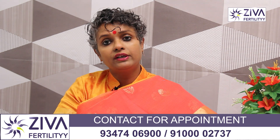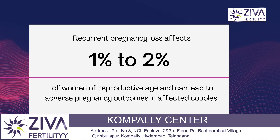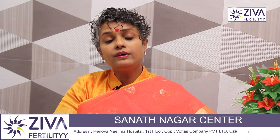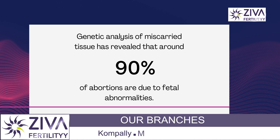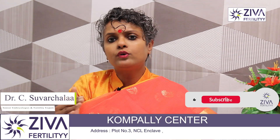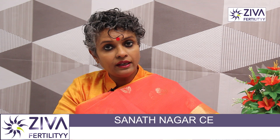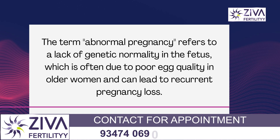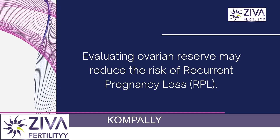Is there a connection between diminished ovarian reserve and recurrent pregnancy loss? In studies, it was seen that around one to two percent of women in reproductive age have adverse outcomes such as recurrent pregnancy loss. Because we are now able to genetically evaluate miscarried tissue, it is known that about 90 percent of pregnancy losses can be attributed to abnormality in the fetus. Abnormal pregnancies — meaning genetic abnormality in the fetus — are usually contributed to poor quality of eggs, especially in women of advanced maternal age. This can be a root cause of recurrent pregnancy loss. So evaluating ovarian reserve could potentially bring down your risk for recurrent pregnancy loss.